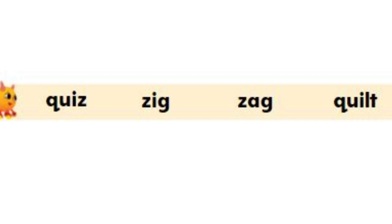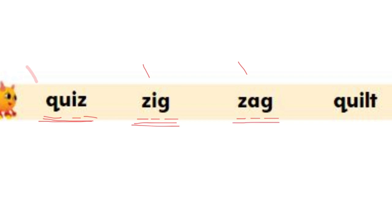Now let's read these words together. Look at the first one: quiz. Now the second one: zig. Now the third one: zag. And the last word: quilt. Well done everybody.